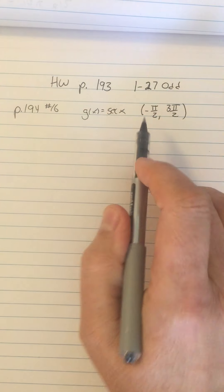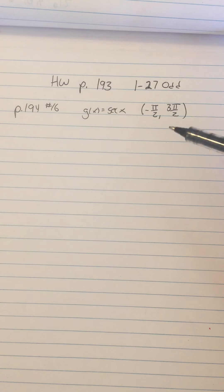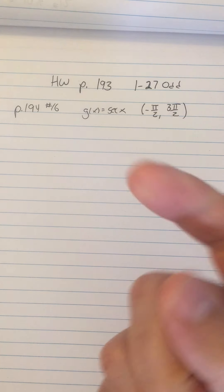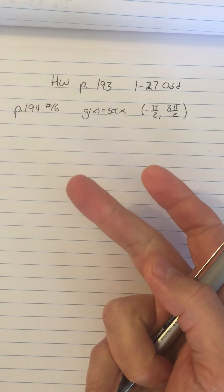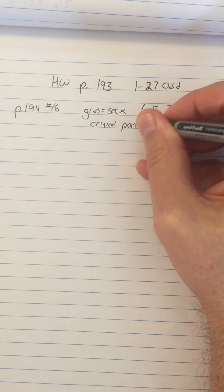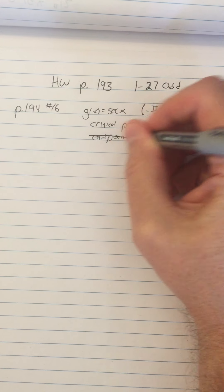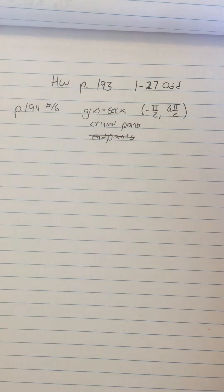We have an interval but notice that the interval has no endpoints. Normally when finding extreme values of a function on an interval you want to think critical points and endpoints. But we have no endpoints, so we're just left with critical points.